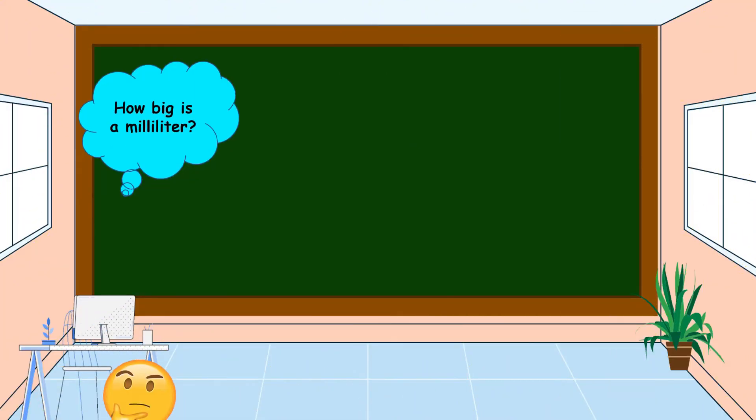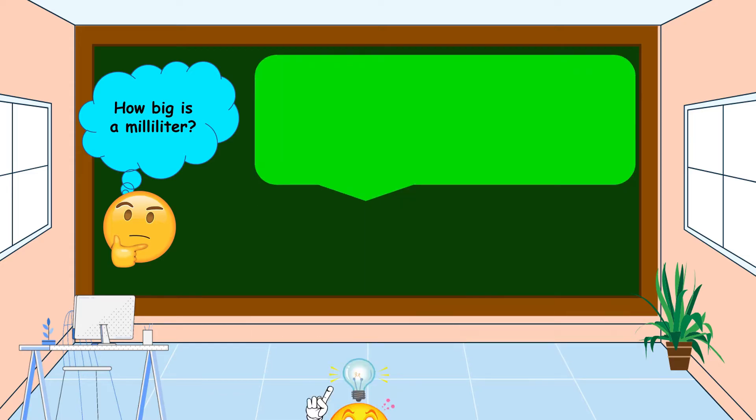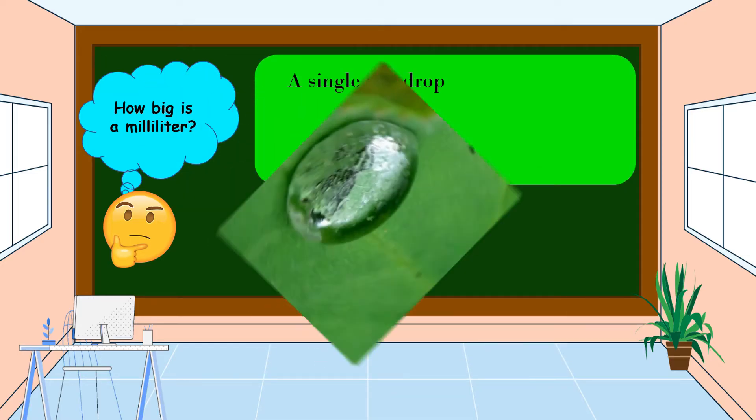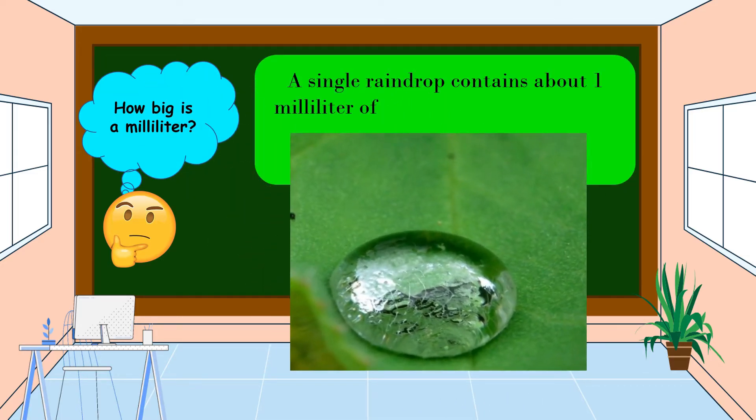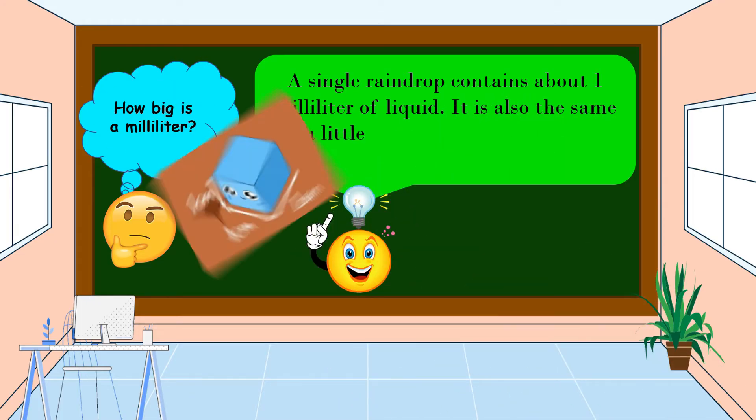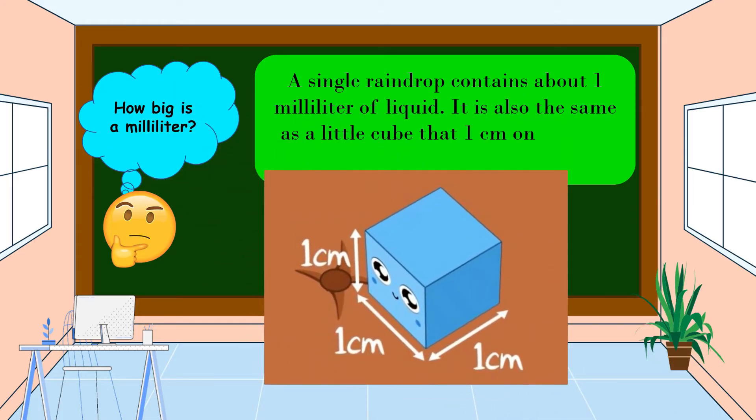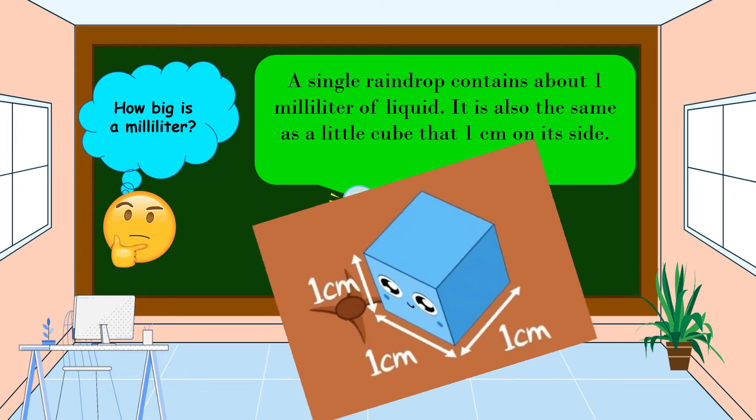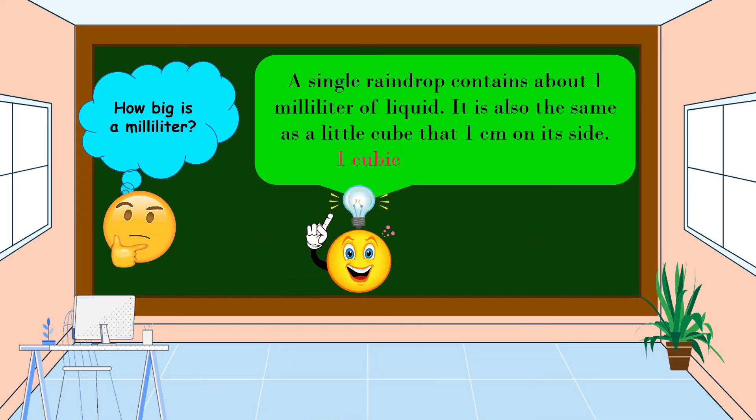How big is a milliliter? A single raindrop contains about one milliliter of liquid. It is also the same as a little cube that is one centimeter on each side. One cubic centimeter is equal to one milliliter.